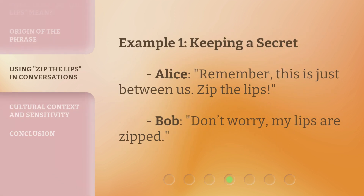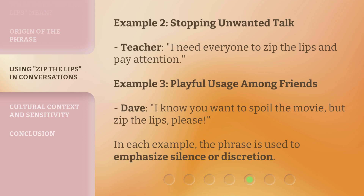Example 1 — keeping a secret. Alice: remember, this is just between us, zip the lips. Bob: don't worry, my lips are zipped. Example 2 — stopping unwanted talk. Teacher: I need everyone to zip the lips and pay attention.